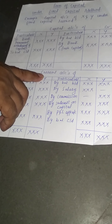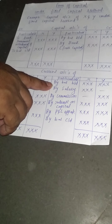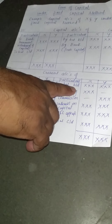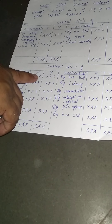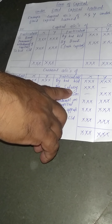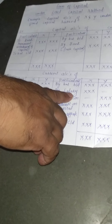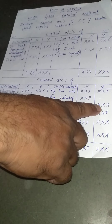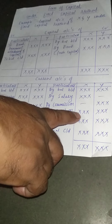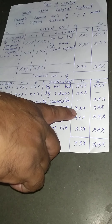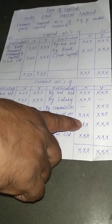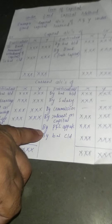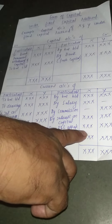In the Current Account, if there is an existing balance from the previous year it is shown as 'By Balance b/d' for credit balance or 'To Balance b/d' on the debit side. On the credit side: salary — in this example, X is entitled to salary but Y is not; commission — Y is entitled to commission but X is not; interest on capital is calculated as done in the P&L appropriation account; and the share of profit from the P&L appropriation account is distributed according to the profit sharing ratio.